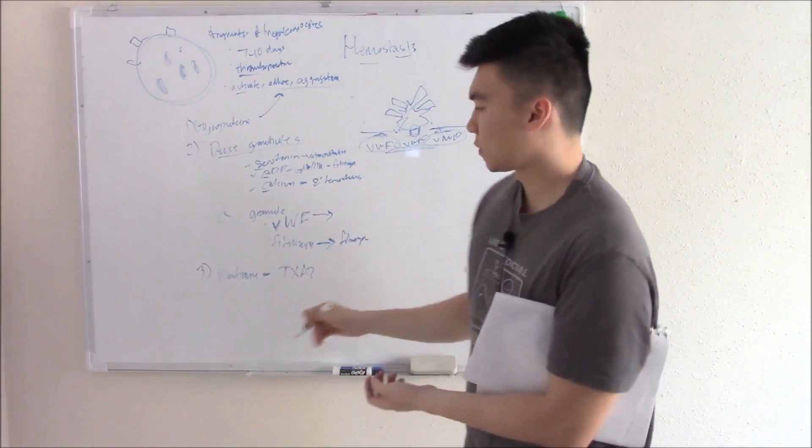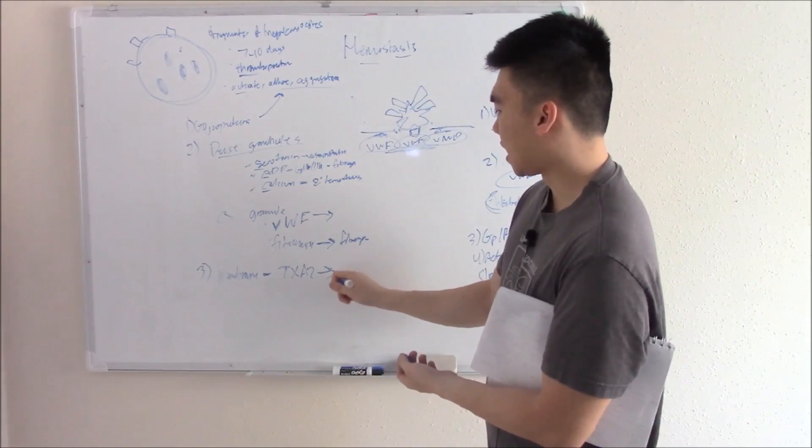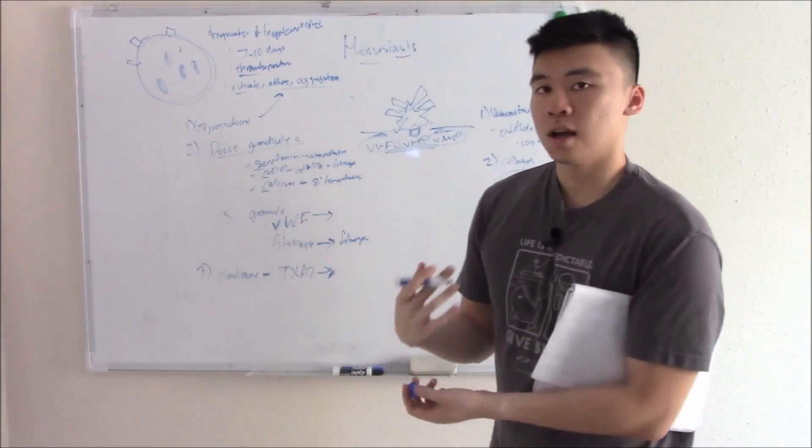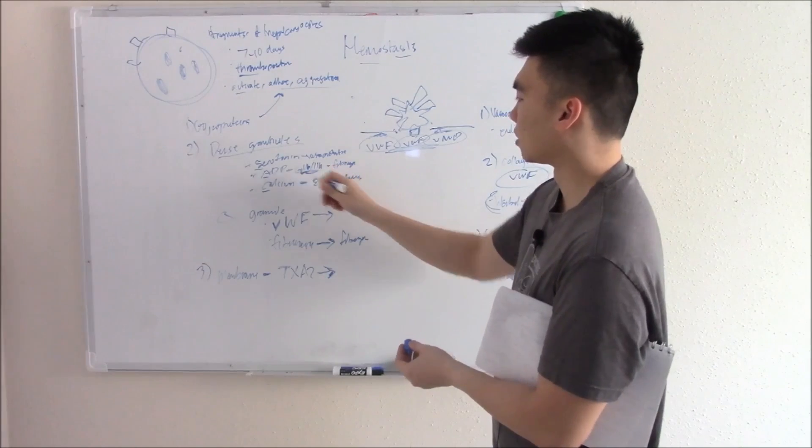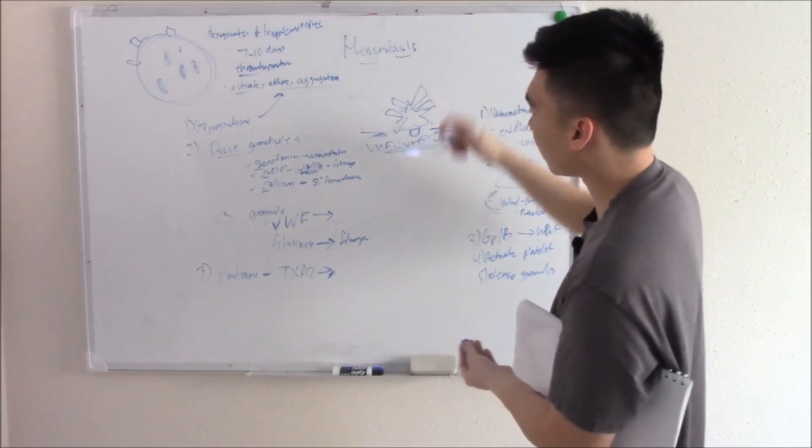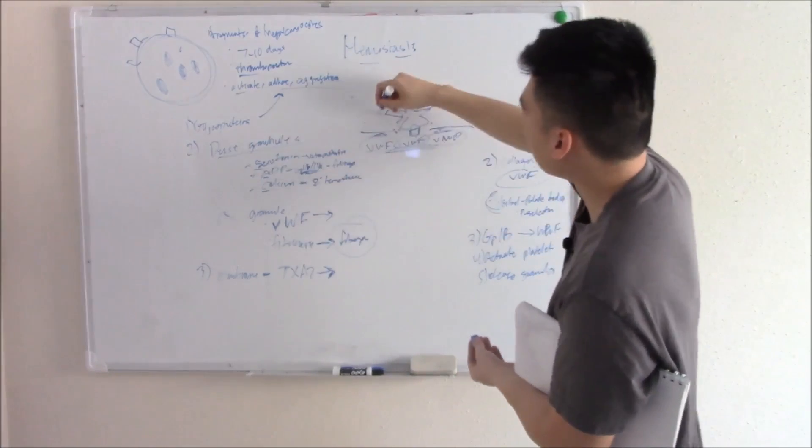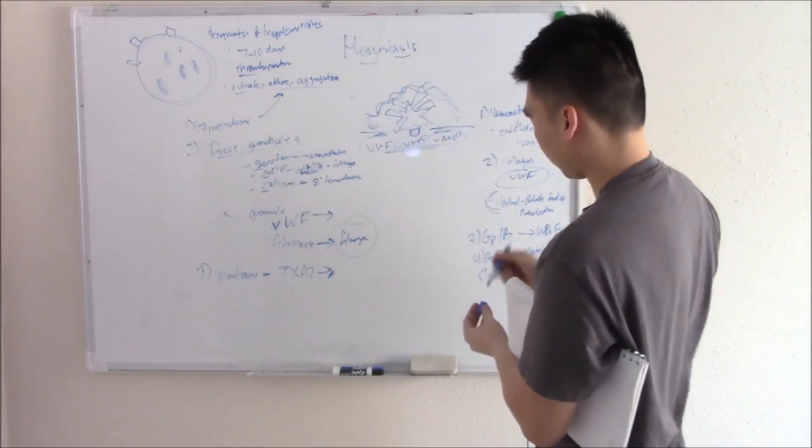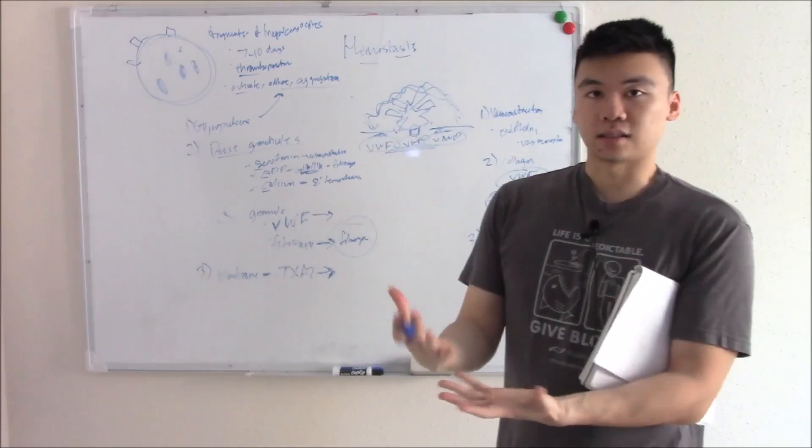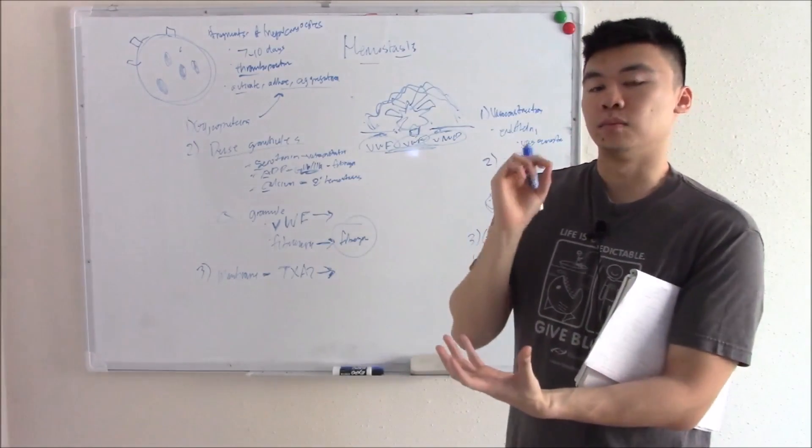Your membrane will also release TXA2 and that causes aggregation through the same mechanism, expression of these receptors. You have a ton of these receptors looking for fibrinogen, you release fibrinogen, and now it's able to drape over our plug. There you have it, that's our primary hemostasis, our temporary plug.